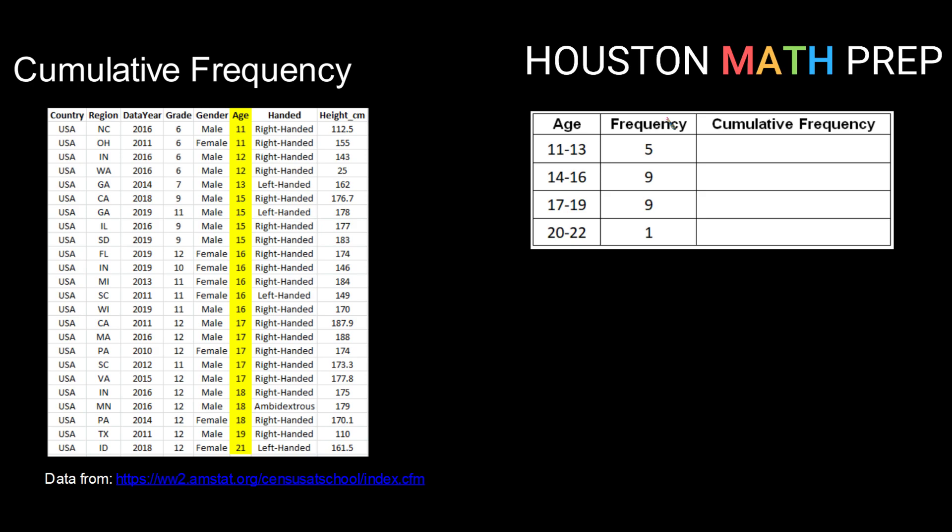So getting into a cumulative frequency distribution, cumulative means to add up or to sum up as you go. So a cumulative frequency count counts up not just the number in that class but the number of items that fall into that class and each class before it.